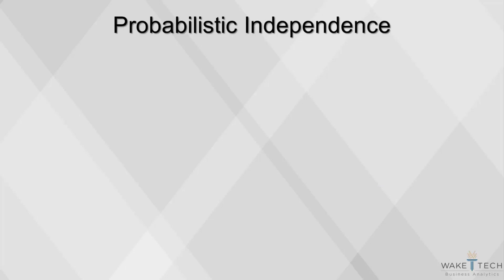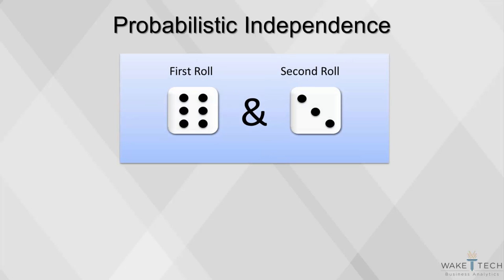If two events are independent, or their outcomes aren't affected by each other, then the probability of both A and B occurring is simply the product of the two probabilities. In the case of our die, the probability of getting a 6 on the first roll and getting a 3 on the second roll is 1 in 6 times 1 in 6, which equals a 1 in 36 chance.